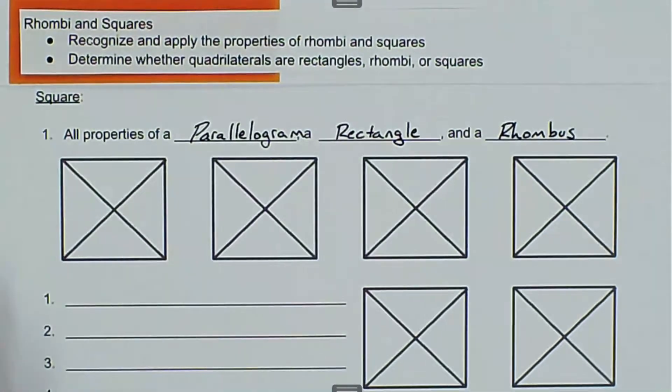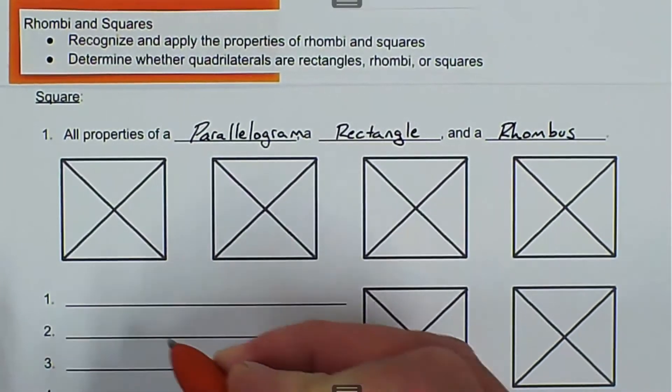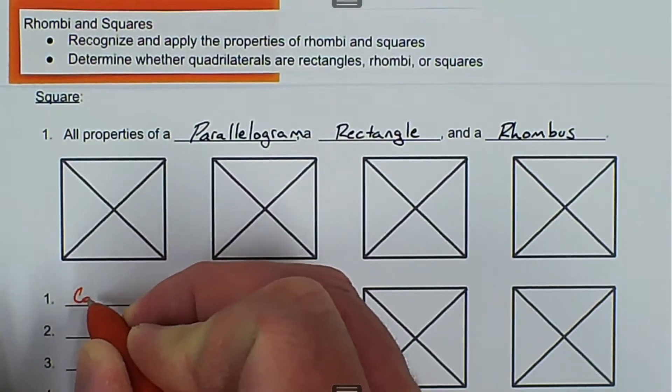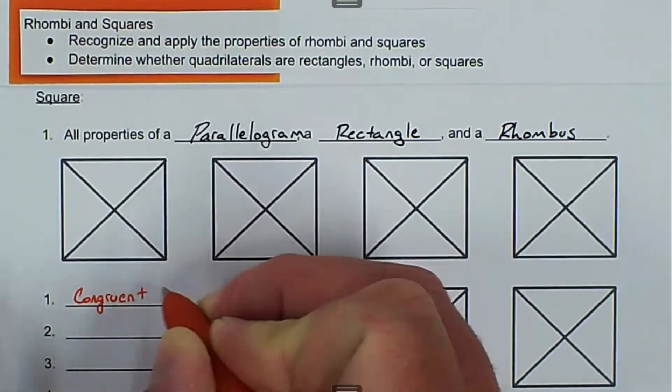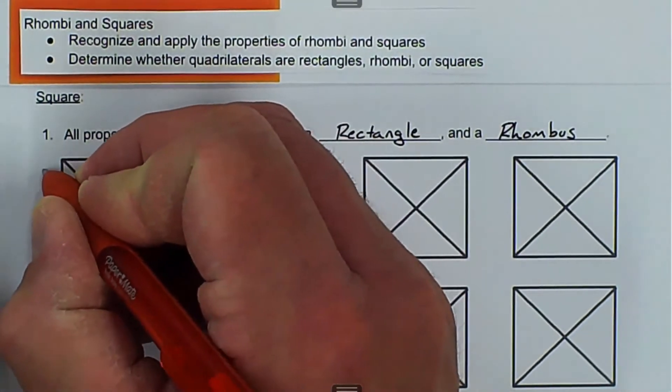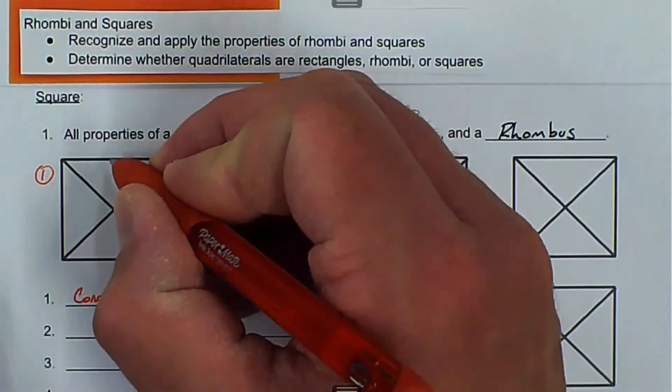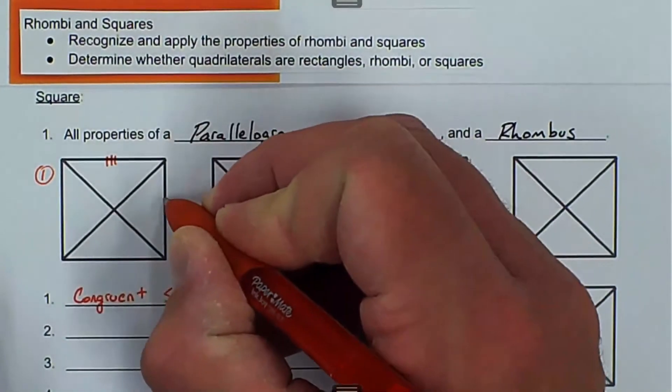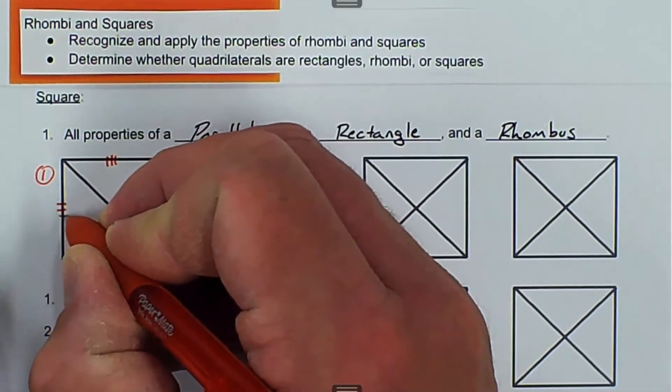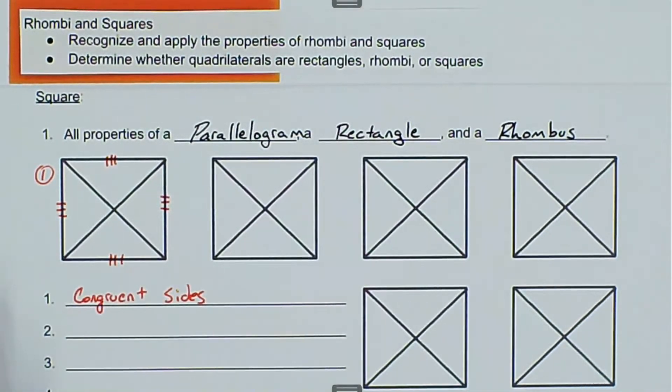There are a few that we want to highlight here. The first one is all sides are congruent. We'll put marks right here, and that's going to show that all sides are congruent. If we put three marks on each side, that will show that all four sides are congruent.